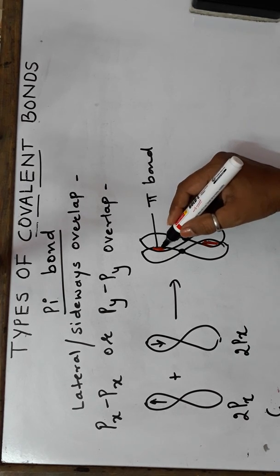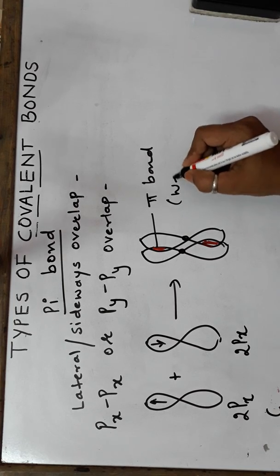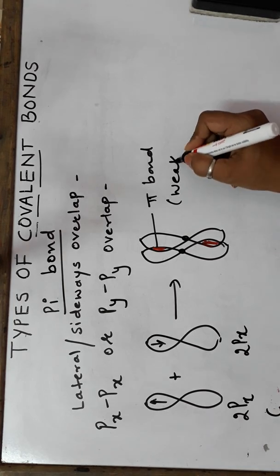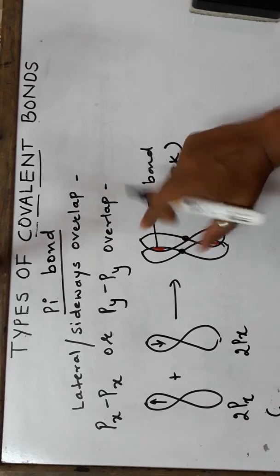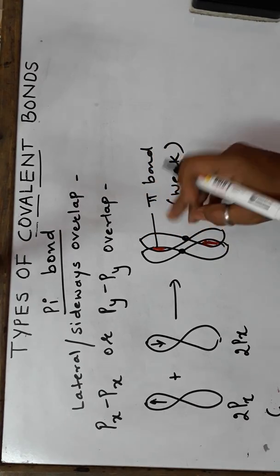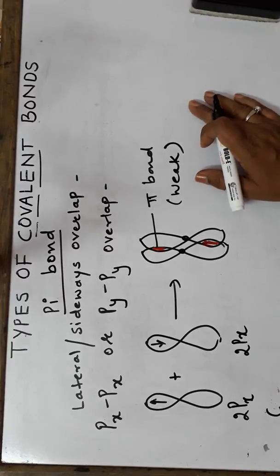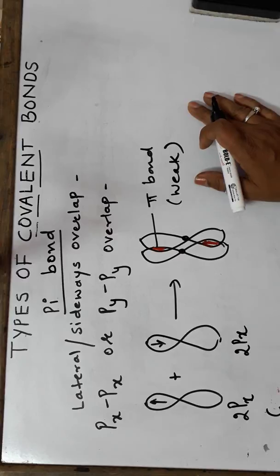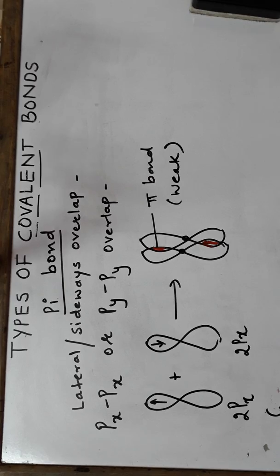Since the extent of overlap is very less, the pi bond is a comparatively weak bond. If the atoms start rotating, this overlap will be destroyed and the bond will break — so there is restricted rotation in the case of a pi bond, unlike sigma bonds which allow free rotation. So that was your pi bond.